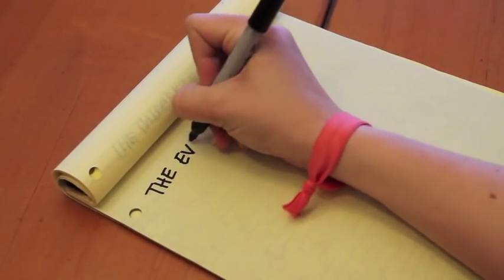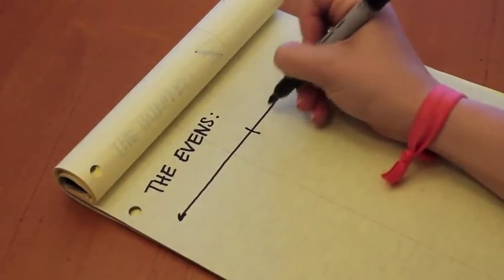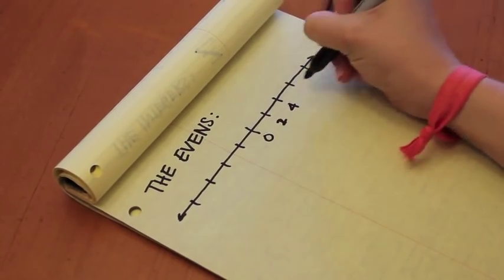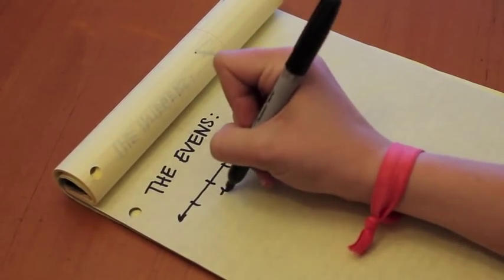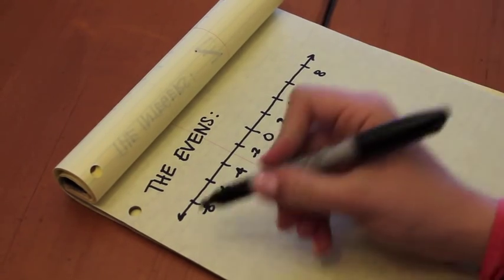Moreover, what if we were to consider other infinite sets? For example, the even numbers. Those would look like the integers on the number line above, except skipping over all the odd numbers. This would also be an infinite set, because we can see that it will extend in both the positive and negative directions forever, just like the integers do.